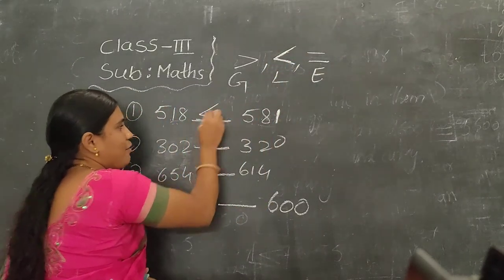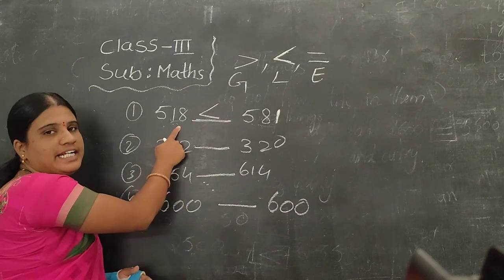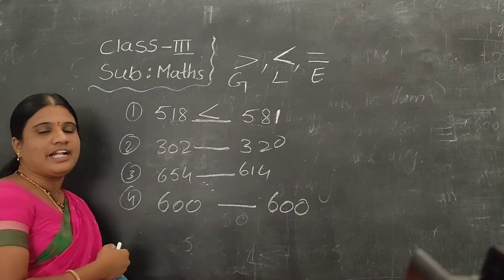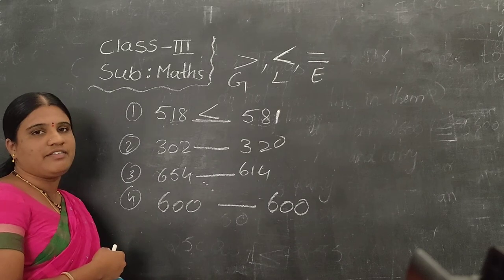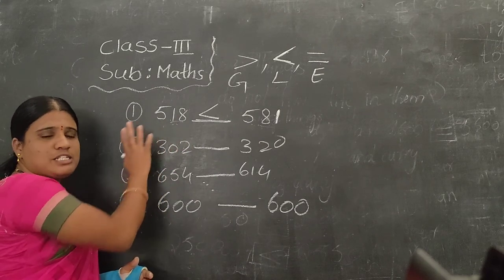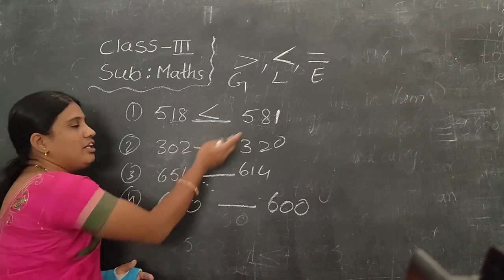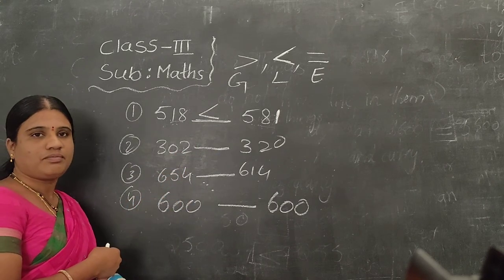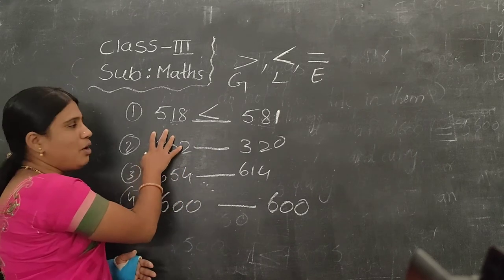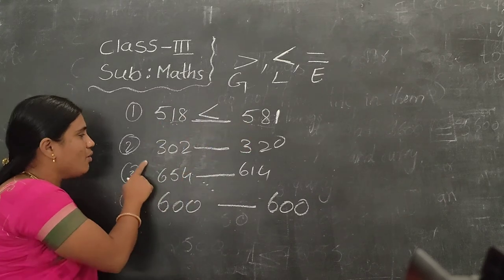So you have to put the less than symbol here. 580 is less than 581. You have to compare the numbers — is the first number smaller or bigger than the second one?